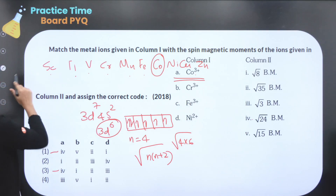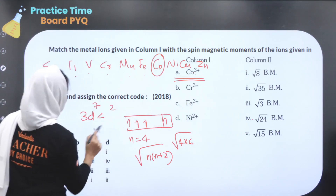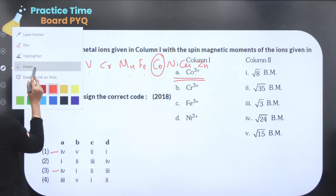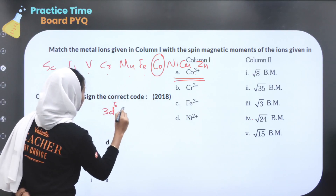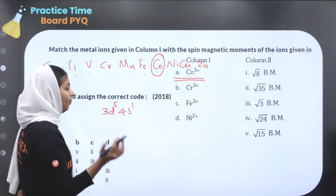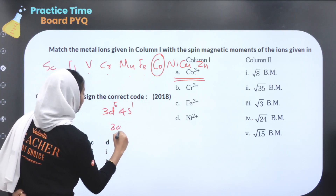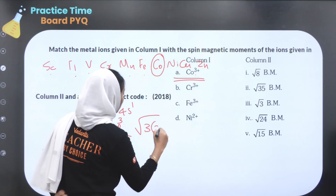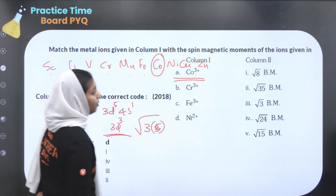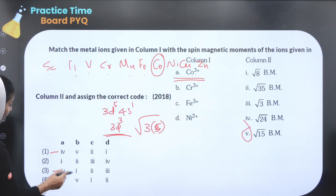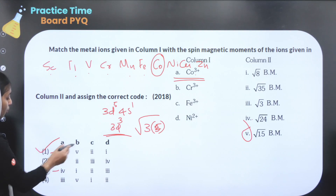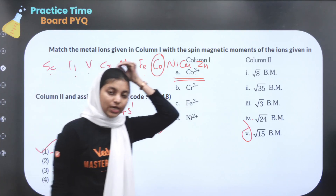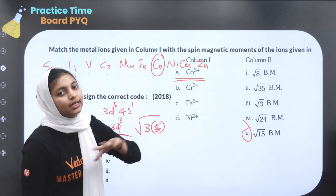The value is root of 4 times 6, which is root 24. For Cr³⁺: chromium is atomic number 24, with configuration 3d⁵ 4s¹. Cr³⁺ gives 3d³. The answer options are A4, B5 — matching the correct option for Co³⁺, Cr³⁺, Fe³⁺, and Ni²⁺.